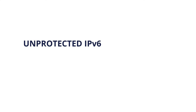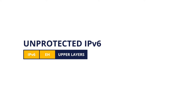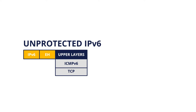We have a regular IPv6 packet that has the basic IPv6 header, maybe some extension headers, shown as EHs, and the upper layer bytes corresponding to other protocols like ICMPv6, TCP, or UDP.